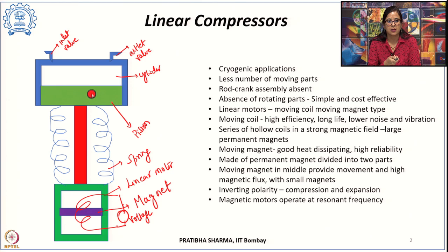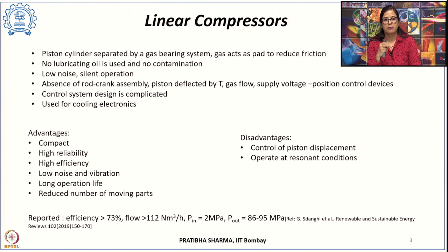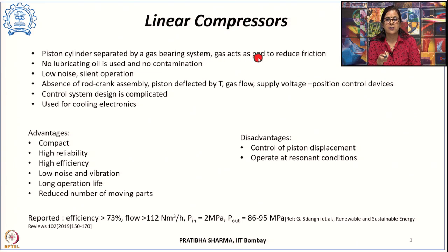The compression and suction stroke is provided by means of coupling through the spring. By inverting the polarity of the supplied voltage, we can achieve compression and expansion of the gas in the compression chamber. These magnetic motors usually operate at their resonant frequency so that ohmic losses are minimized, with direct coupling to the piston. The biggest advantage is a gas bearing system that separates the piston and cylinder, reducing friction and losses.